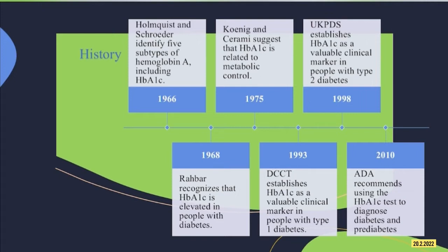In 1975, Koenig and Cerami suggested that hemoglobin A1c is related to metabolic control. Then in 1993, the DCCT established A1c as a valuable clinical marker in people with type 1 diabetes. In 1998, the UKPDS established A1c as a valuable clinical marker in people with type 2 diabetes.